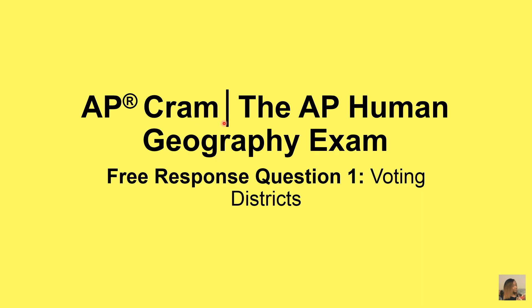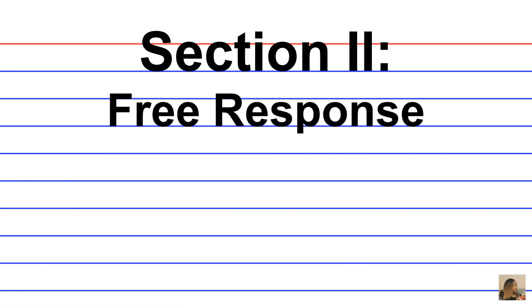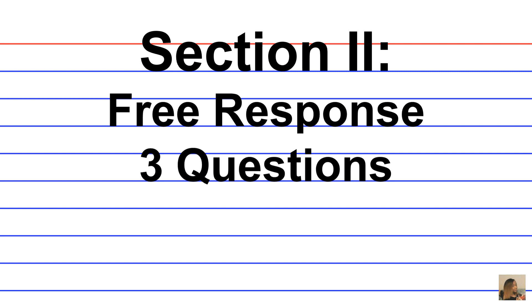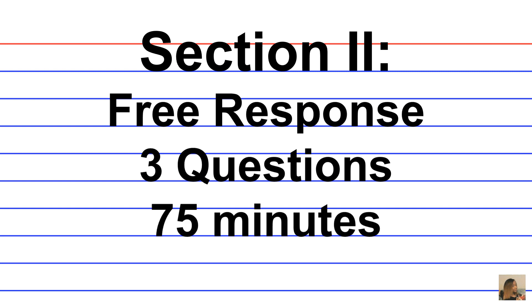AP CREM, the AP Human Geography Exam, Free Response Question Set 1. Remember that Section 2 consists of free response questions. There are three questions that should be formatted as short essay answers, and you have 75 minutes to complete them, so allocate your time properly. The free response section is 50% of your exam score.